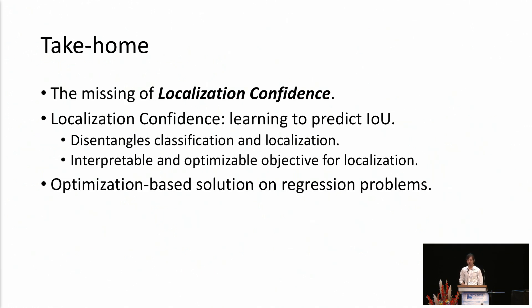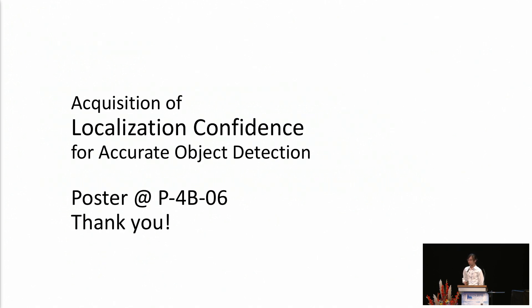Finally, the take-home messages. In this paper, we discussed the missing of localization confidence in object detection. We proposed the idea of learning to predict the IOU, which makes the network acquire the localization confidence. The acquired localization confidence helps us to disentangle the classification and localization. Moreover, it provides an interpretable and optimizable objective for localization. From an algorithmic point of view, we propose an optimization-based solution to the bounding box regression problem, which is previously solved by regression. We hope all these ideas and insights can benefit the community. Welcome to our poster session for more technical details and discussion, and thank you all for your attention.